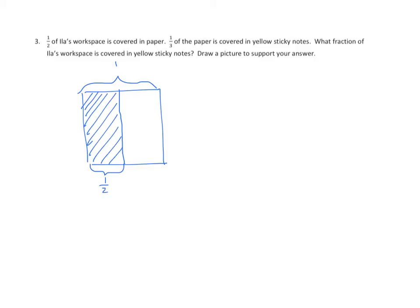One-third of that paper is covered with yellow sticky notes, so we'll partition it into three equal parts going horizontally, label one-third, and double-shade. We have one out of six shaded, so one-sixth of Ila's workspace is covered with yellow sticky notes. And there's a picture to support your answer.